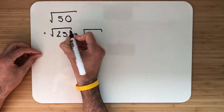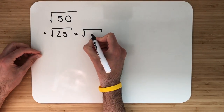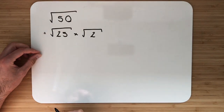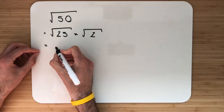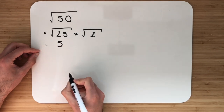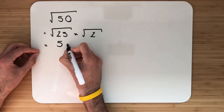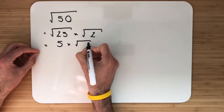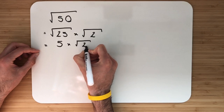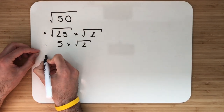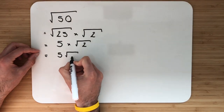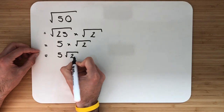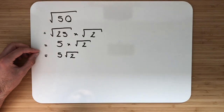So we have root 25 multiplied by root 2. Simplify down where possible — the square root of 25 is 5, multiplied by root 2. We write that as 5 root 2.